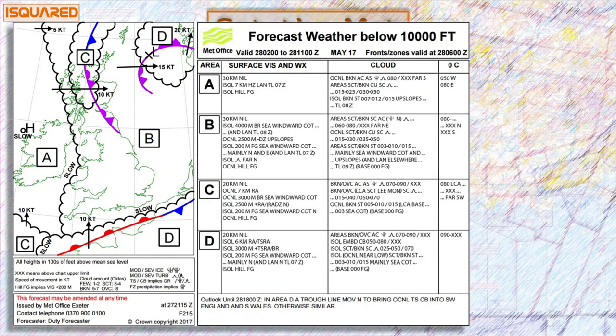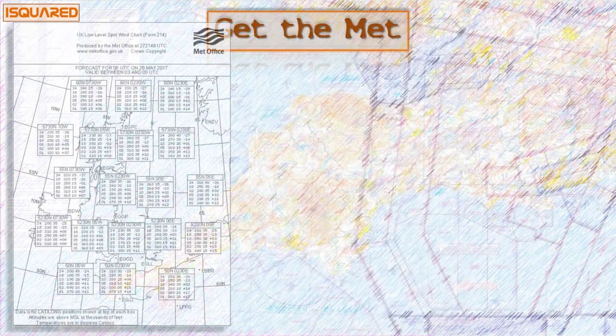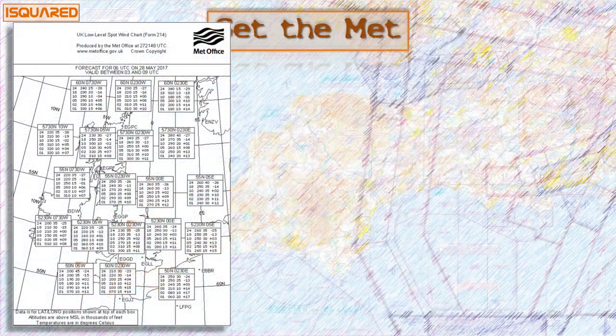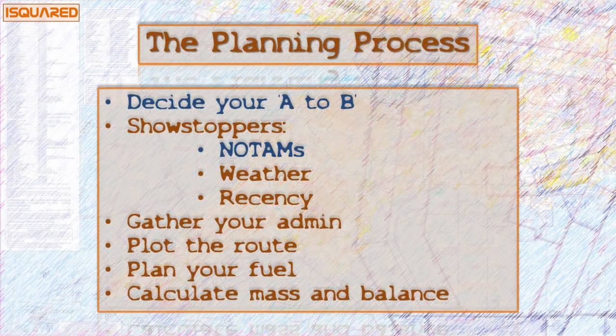What we're really interested in are the Met forms 214 and 215. The F215 gives us regional forecasts in terms of cloud base and visibility as well as any associated MET hazards. The F214 gives forecast wind and temperatures at different levels, and these are critical figures for our calculations. I've identified the three areas that sit over our planned route today so I'm going to make a note of that information and we'll use it later.